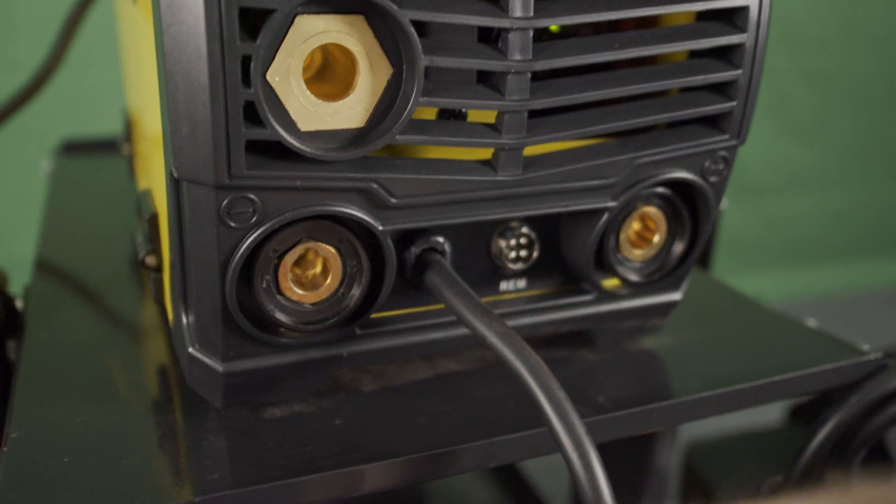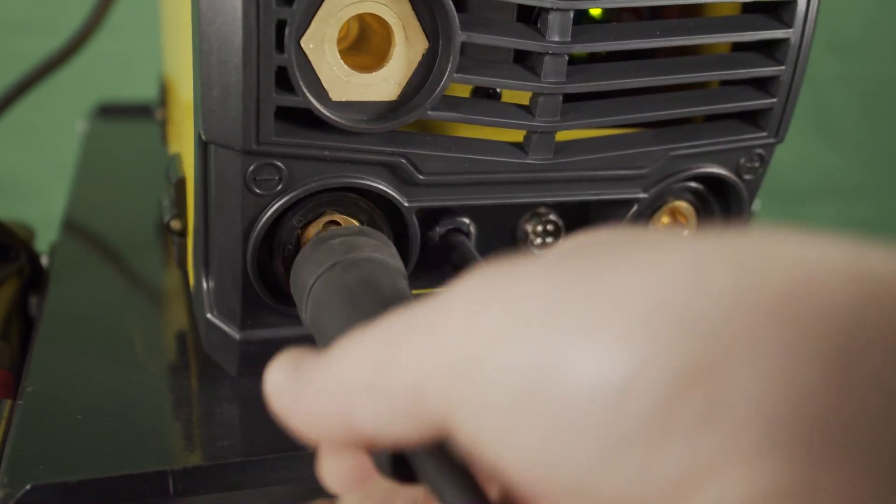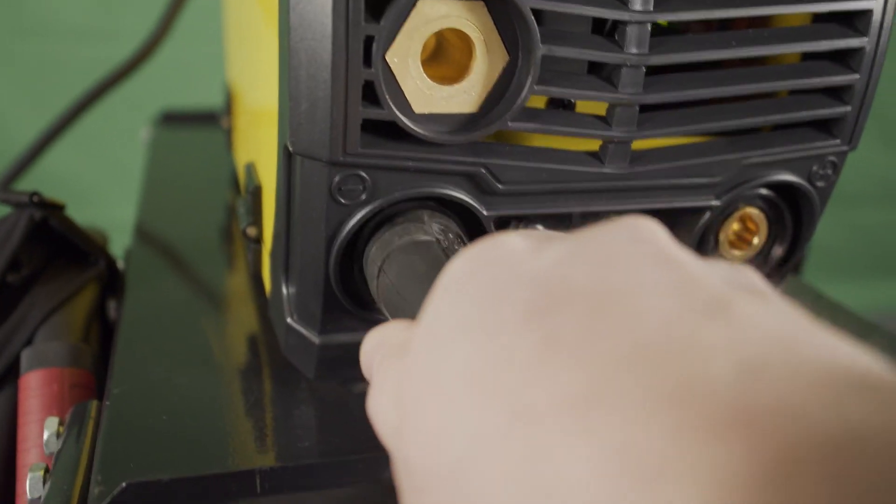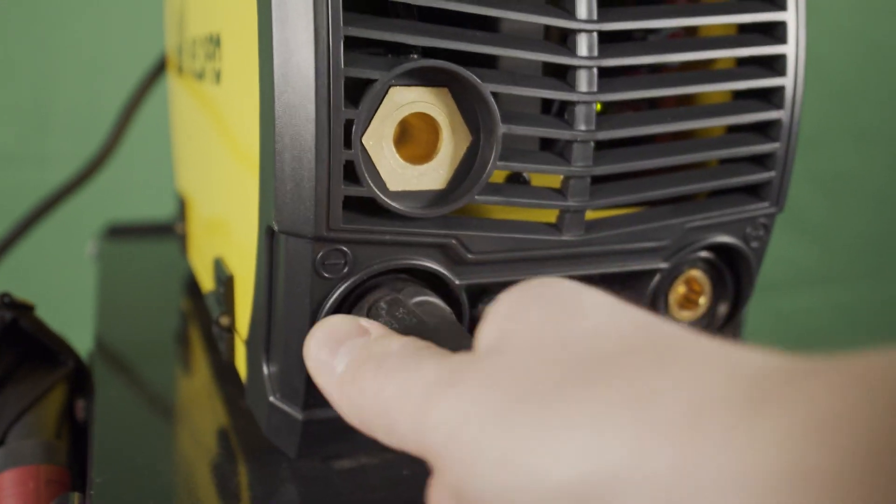Because we're running DC electrode positive we're going to go ahead and connect our ground clamp to the negative dense connector on the front of the machine. We do this by inserting the dense connector into the lug and rotating 90 degrees clockwise. This will ensure that the connector is secure.